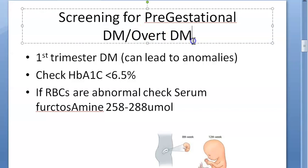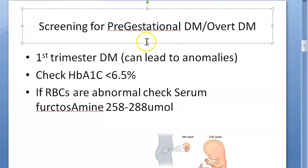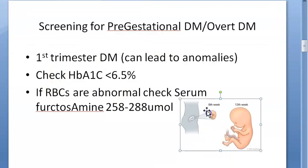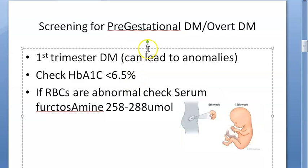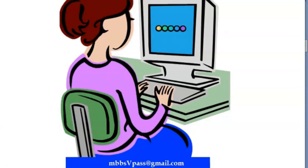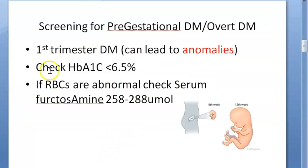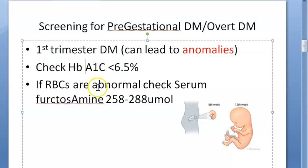Overt diabetes is more dangerous because she is starting her pregnancy with diabetes, and in the first trimester there is organogenesis, so this can lead to anomalies. Screening criteria: fasting plasma glucose greater than 126 mg/dL indicates diabetes, or HbA1c — glycosylated hemoglobin — greater than 6.5% indicates pre-gestational diabetes mellitus.